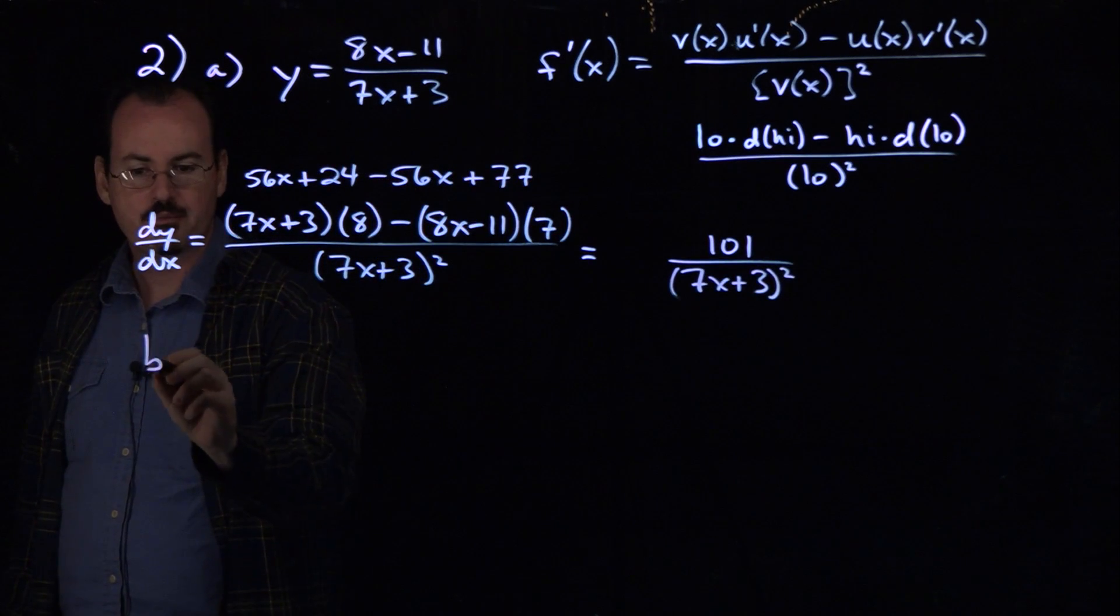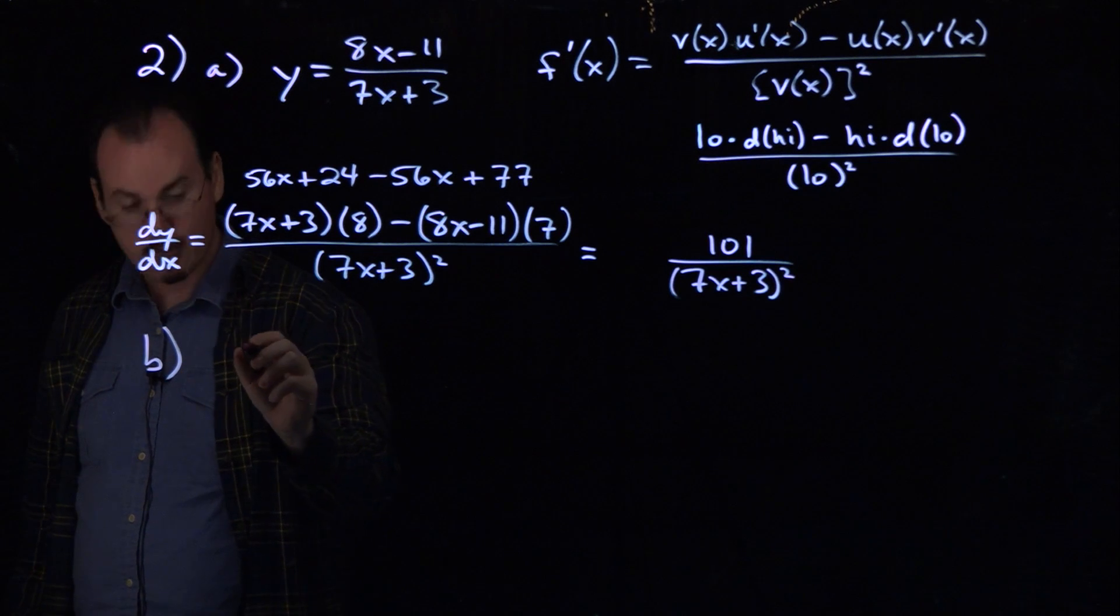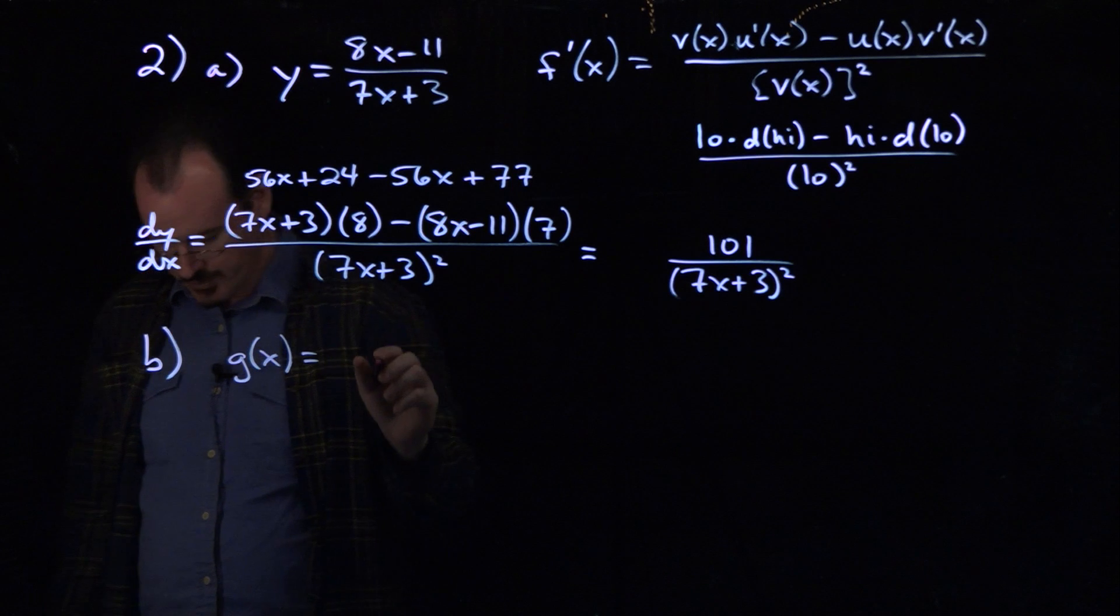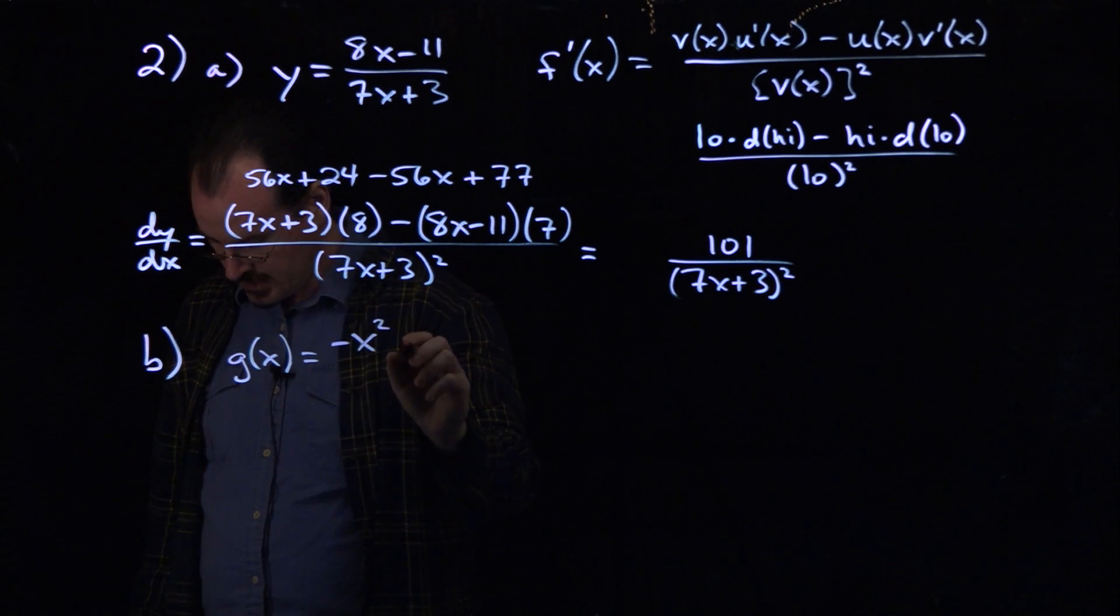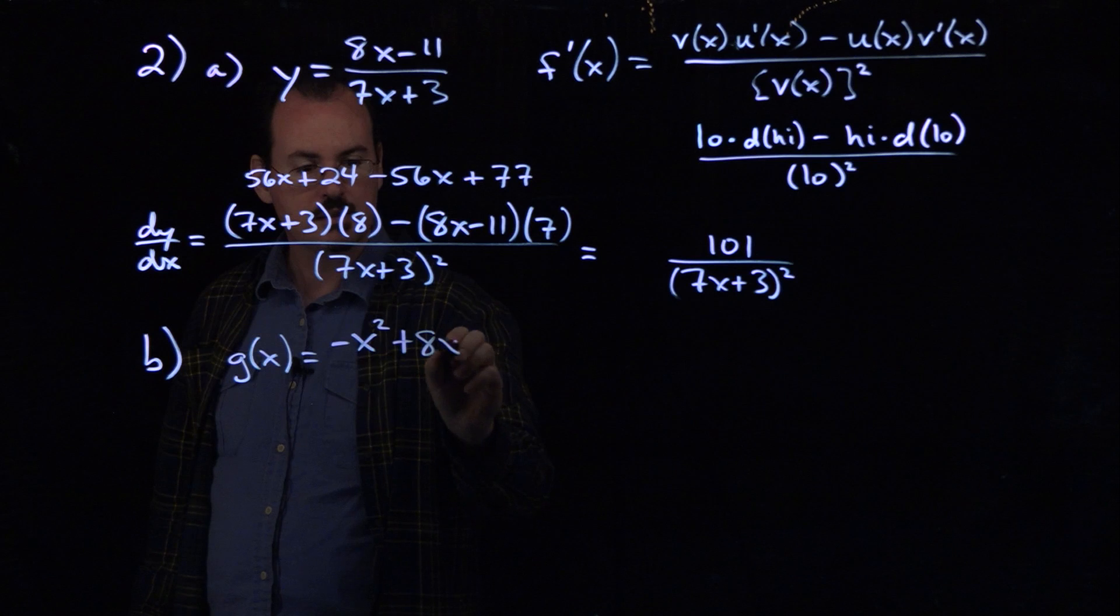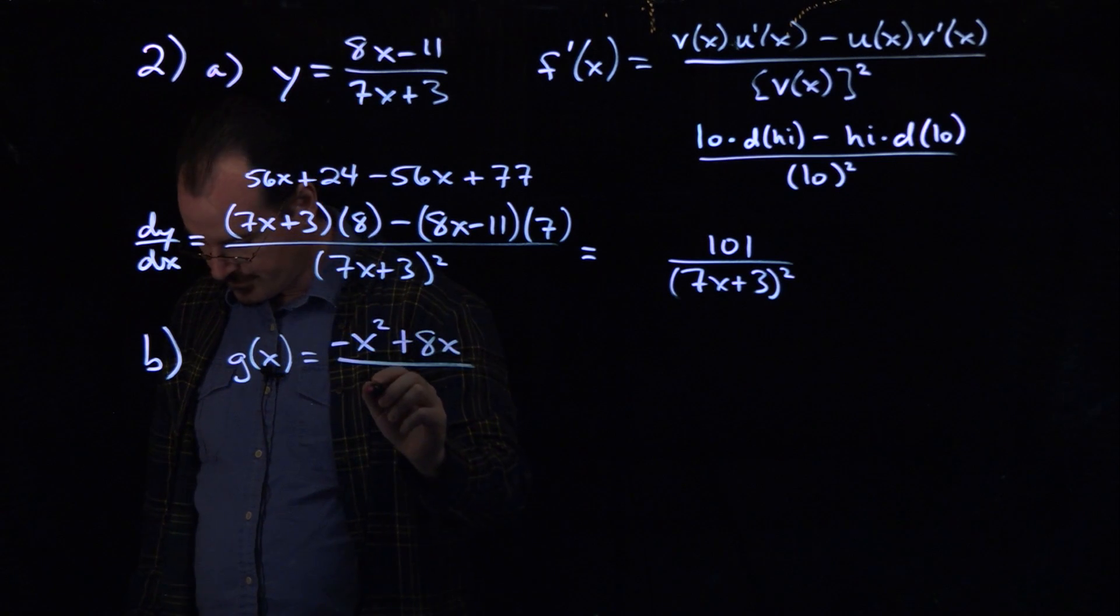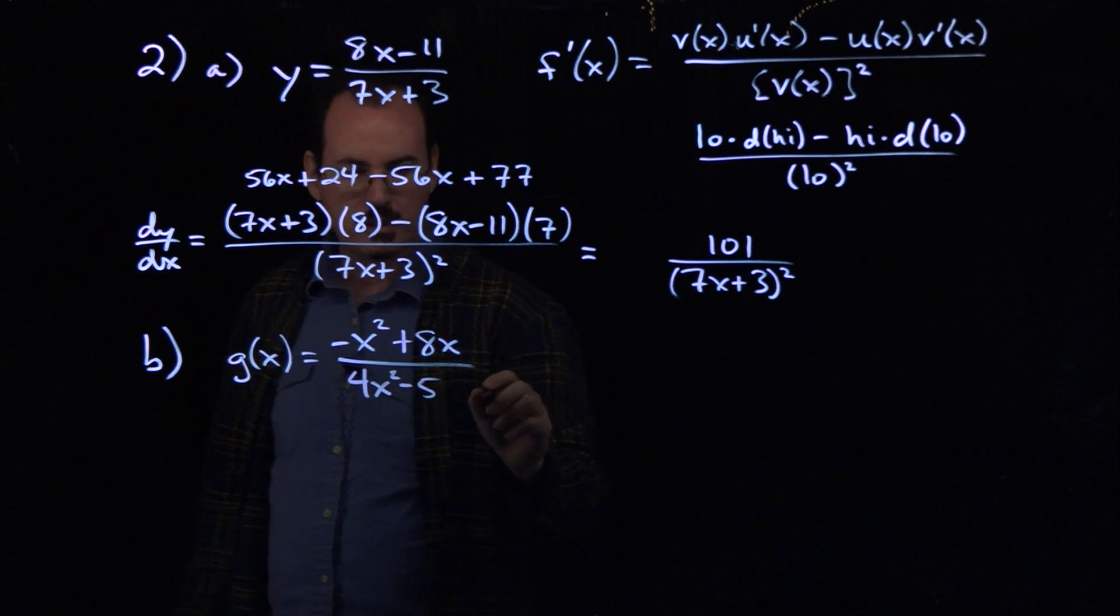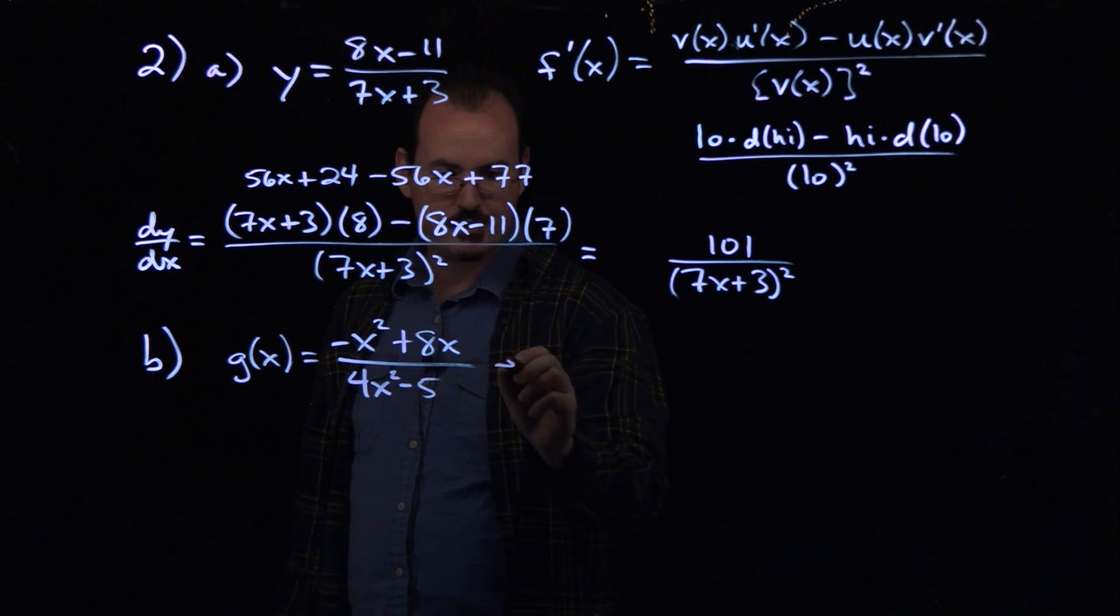Let's do part b. So similar idea, if you want to use that memory aid, it might make things a little bit easier. So our derivative here, or our function here, is minus x squared plus 8x over 4x squared minus 5.